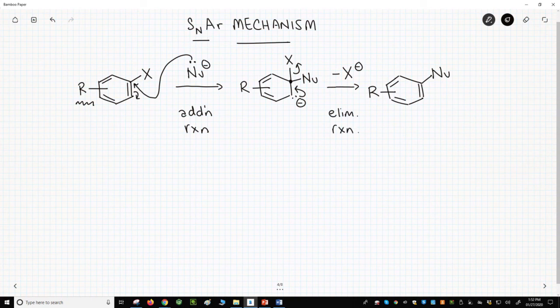So as you can see, the SNAr is a two-step process. Energetically, we have a stable aromatic starting material. Let's put this on an energy diagram. Starting material is down here. We go through a transition state, and we form a relatively high-energy reaction intermediate.